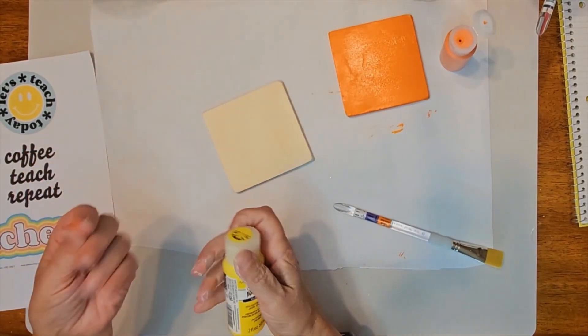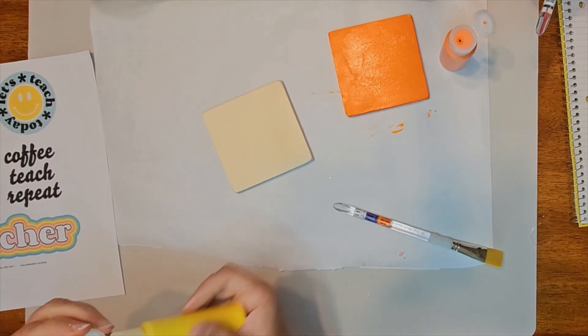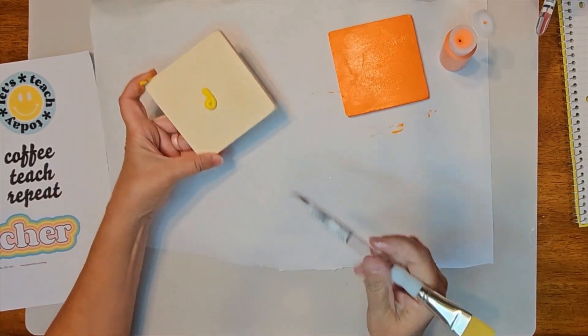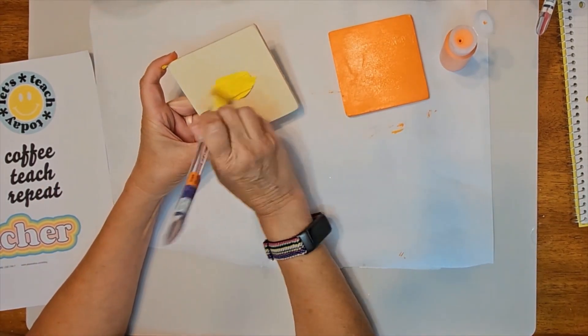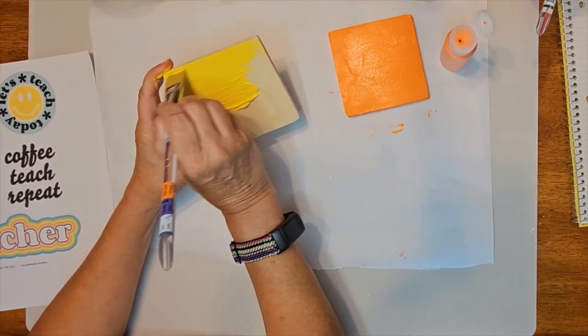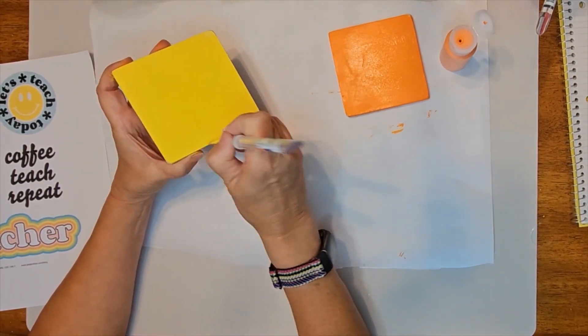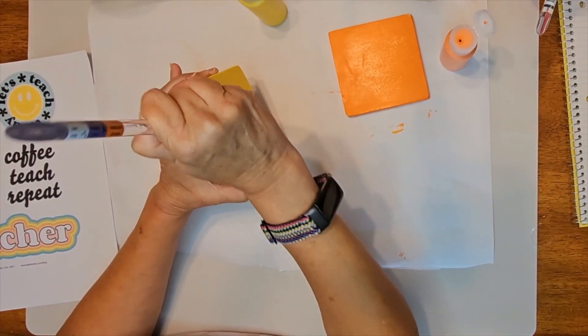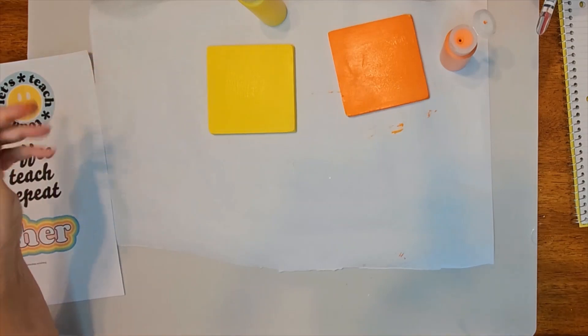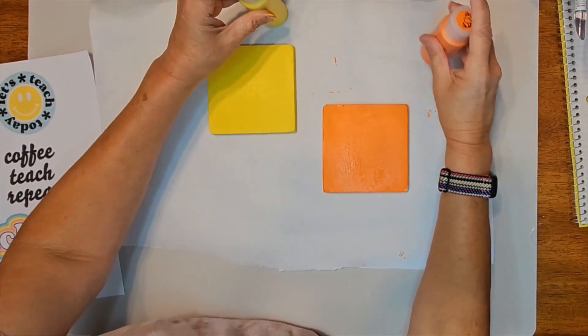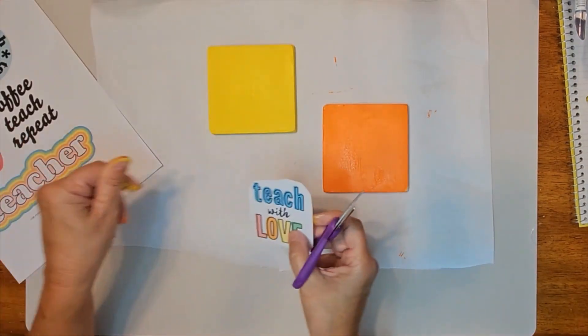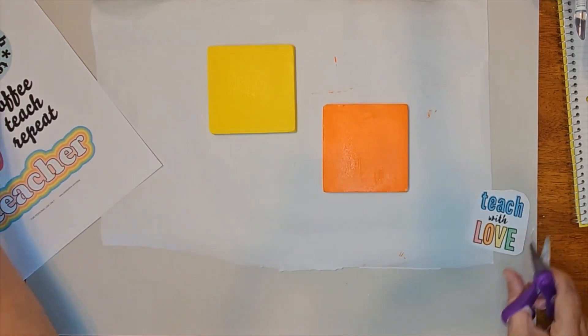And let's just pour a little paint on the top of here to get started. In the meantime, while we are waiting for these to dry so we can add a little more paint, I'm just going to fussy cut each one of these.